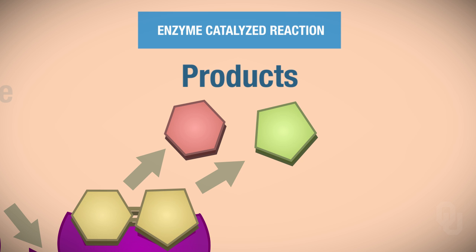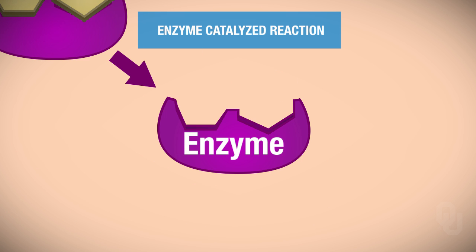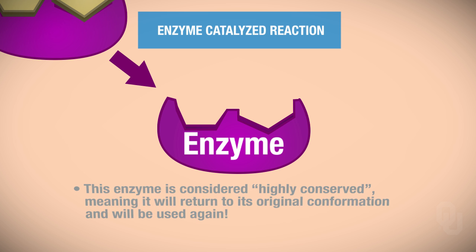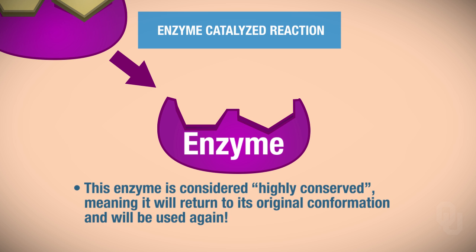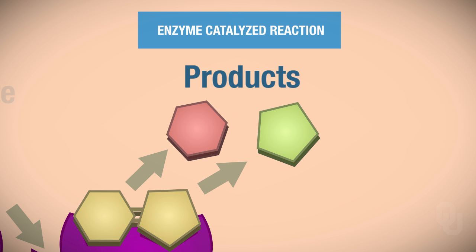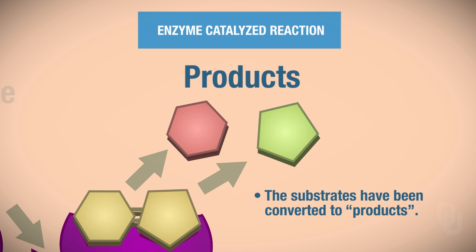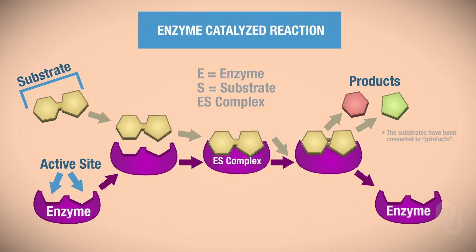And if you notice, the enzyme retains its original shape. The enzyme is what we call highly conserved. At the end of this reaction, it has returned to its original conformation and can be reused. So enzymes can be reused over and over. The substrate, on the other hand, has been converted into a product.